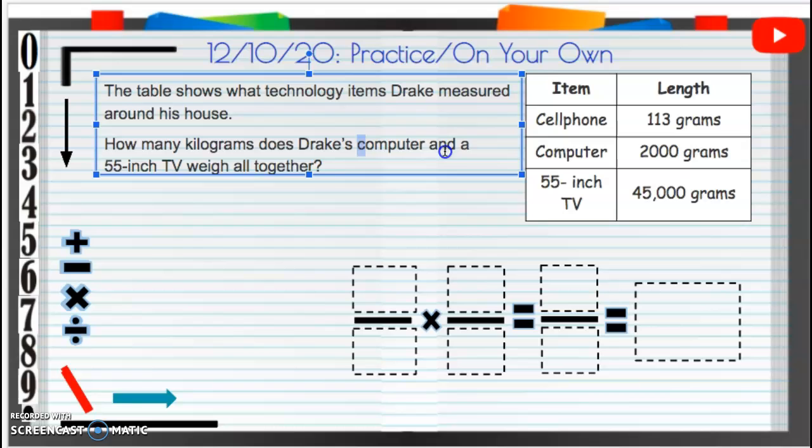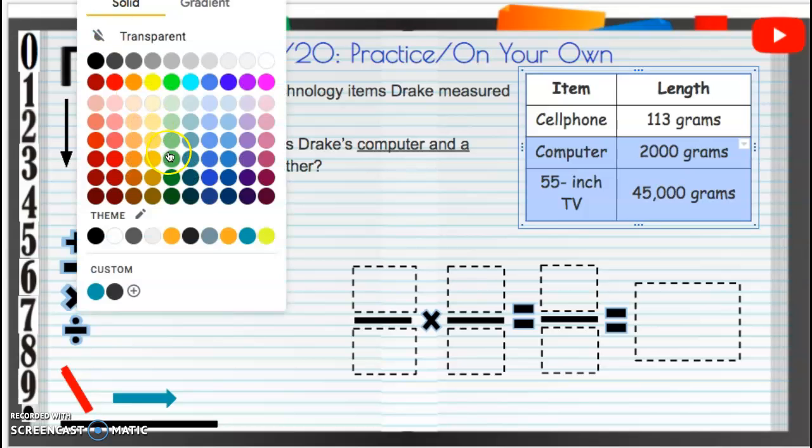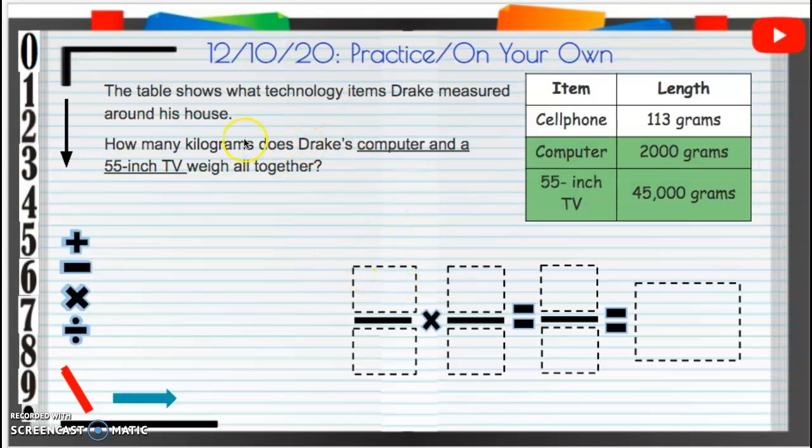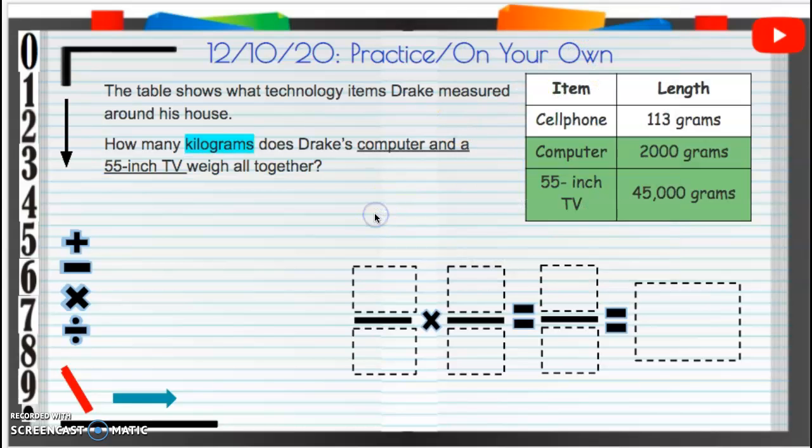I'm trying to figure out his computer and a 55-inch TV, so I'm going to color code those. Perfect. We're going to figure out how many kilograms from grams. First we need to add these two together to see how many grams they would have total combined.